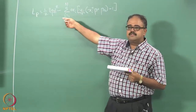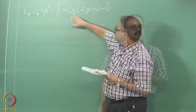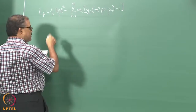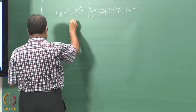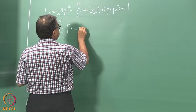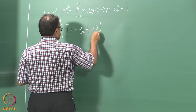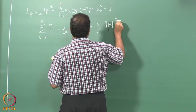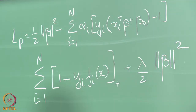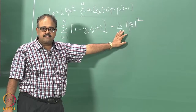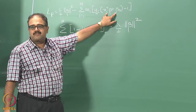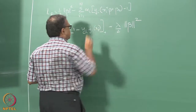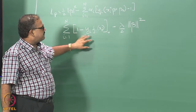Remember the primal objective function we had for SVMs. One way of thinking about it is to write it the following way. I have replaced the alphas with a lambda here, and XI transpose beta plus beta naught is actually F of XI. So I have written F of XI, and then essentially the same objective function except for this plus term here.